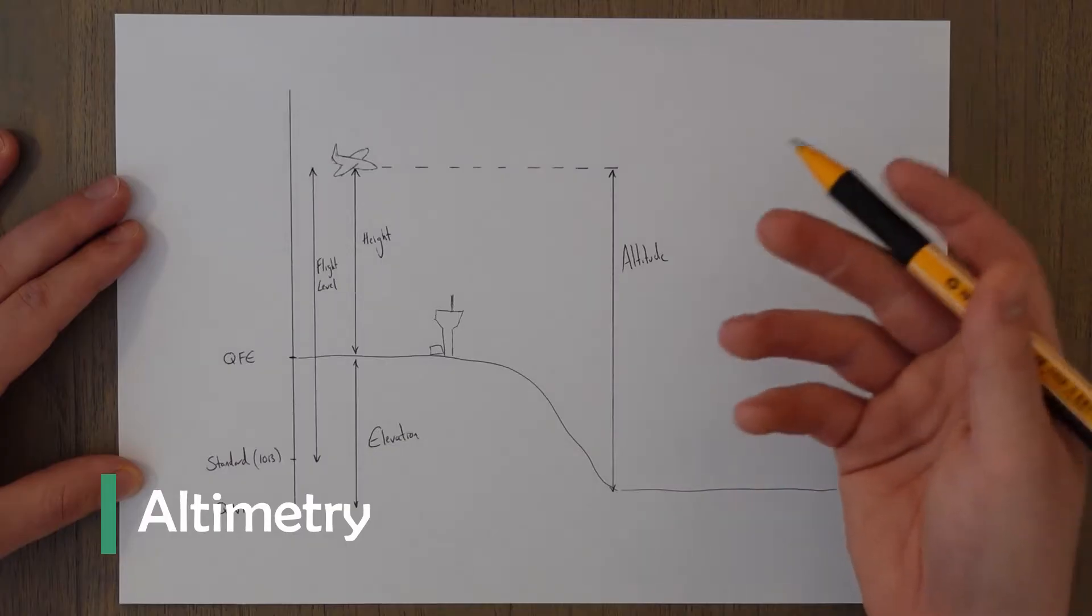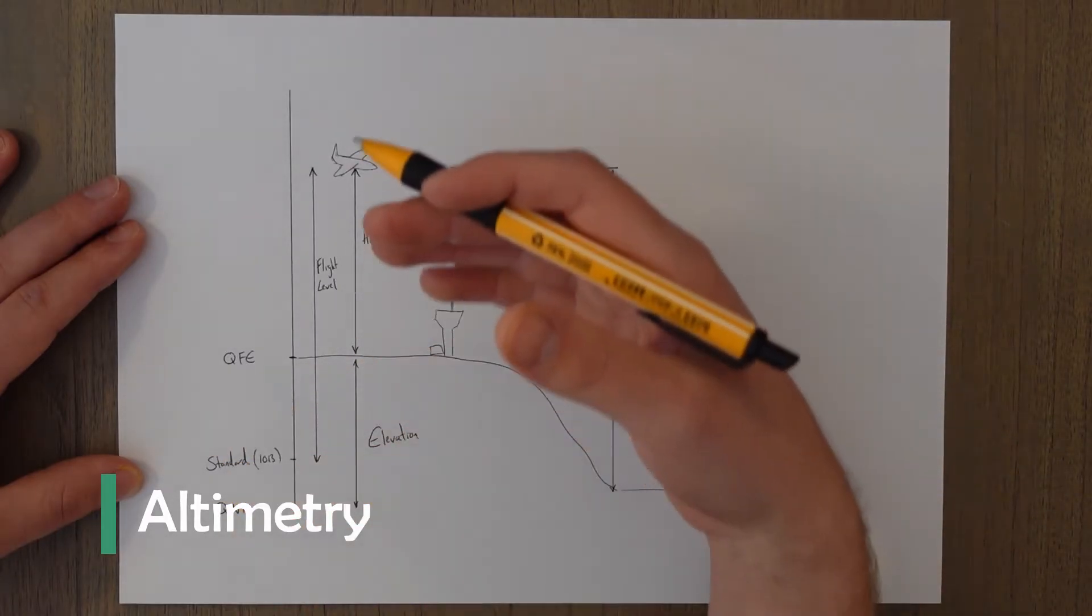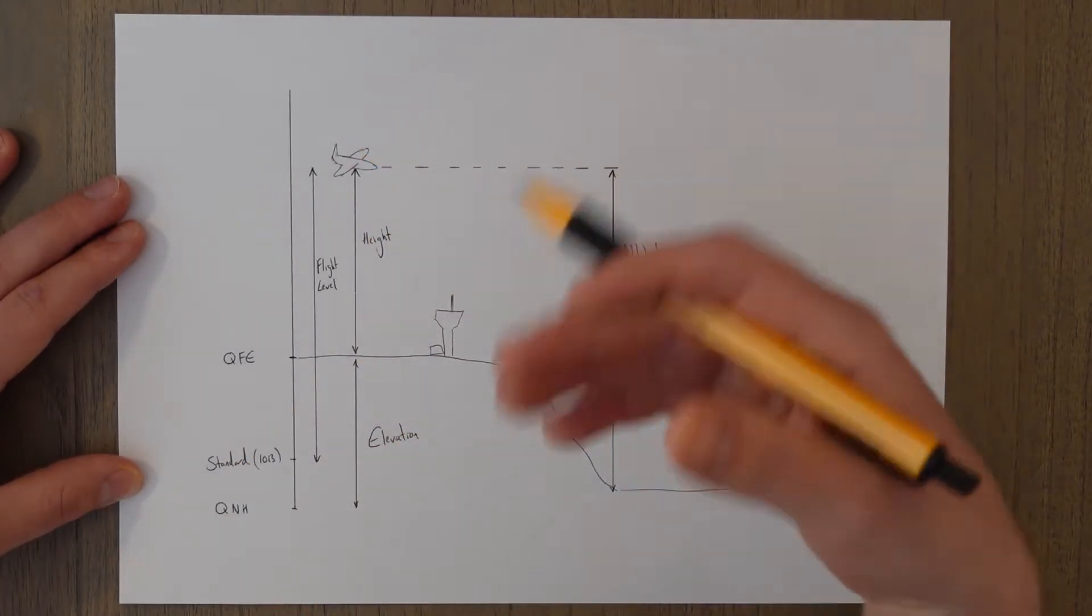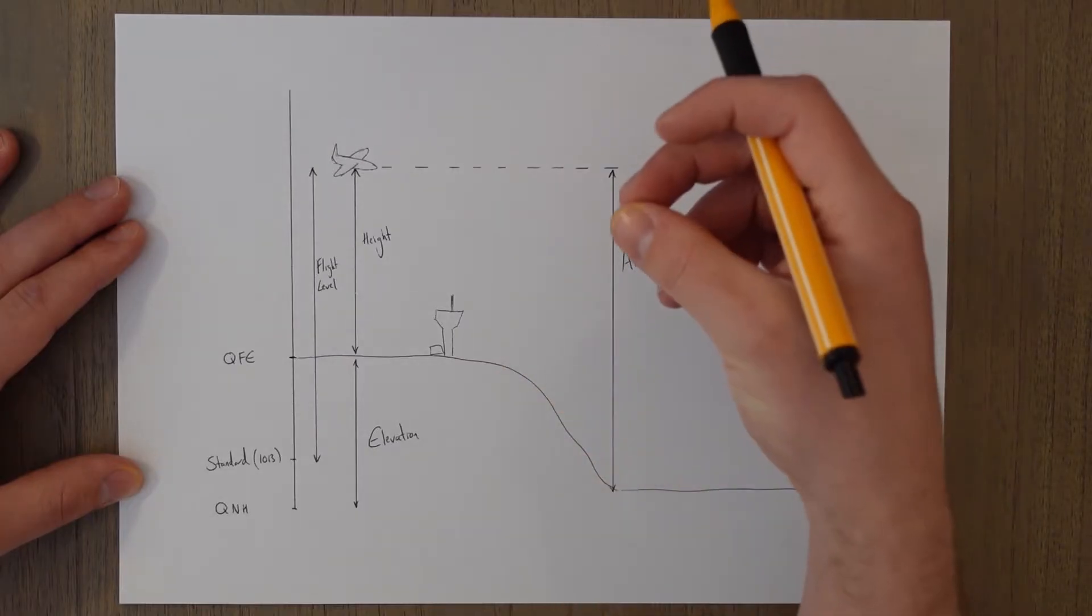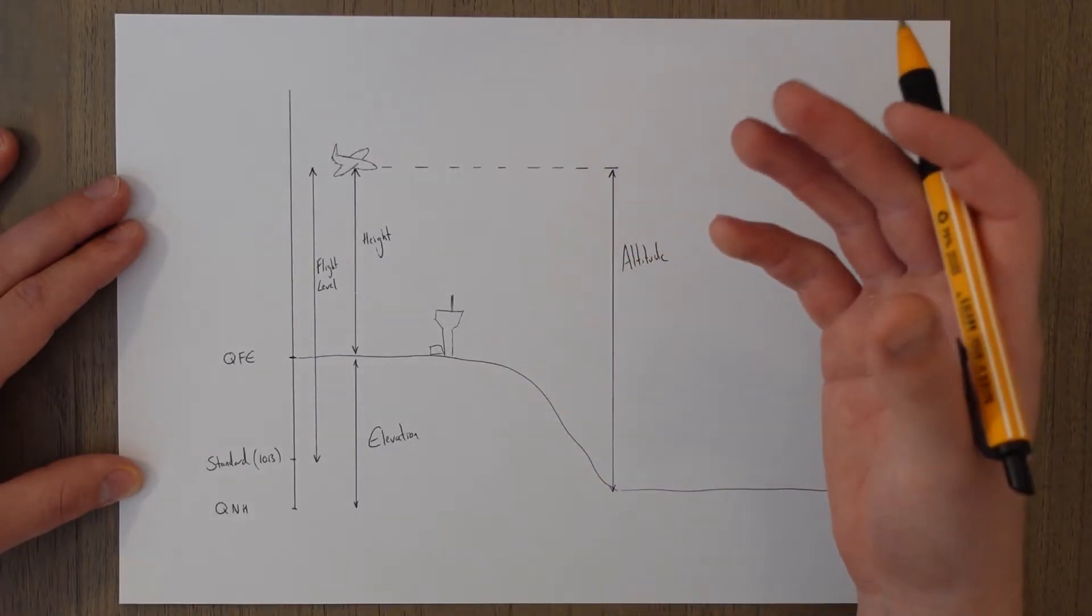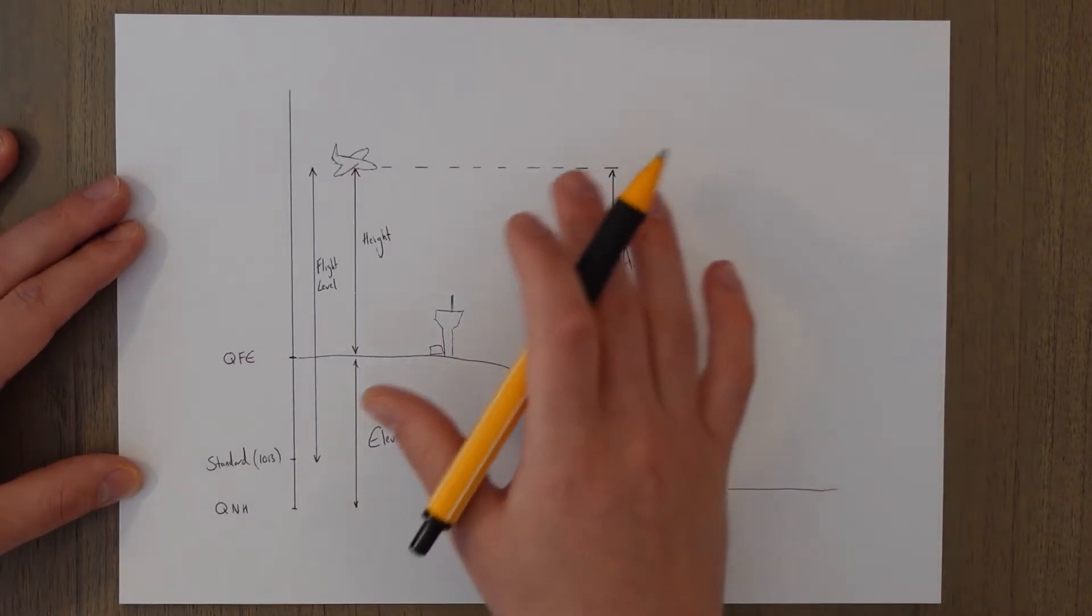Altimeters work by sensing the difference in pressure between a datum point and the current pressure, and then you multiply the difference by that 27 foot per hectopascal lapse rate. We can set a few things as our datum.